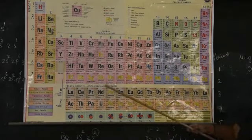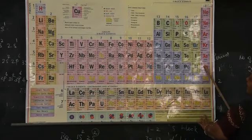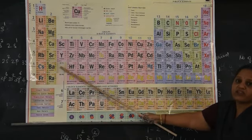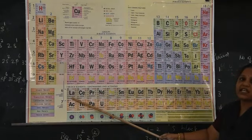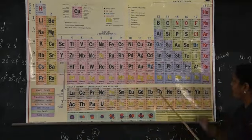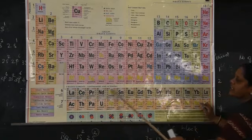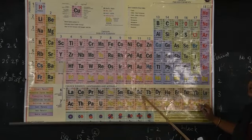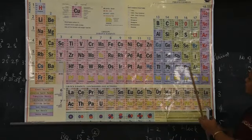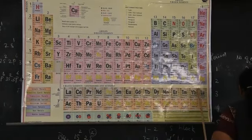In the sixth period, the first two are atomic numbers 55 and 56. After that, atomic number 57 (lanthanum) is actually a D block element, but it is placed along with the 14 lanthanoid elements (atomic numbers 58–71) because their properties are similar. So the sixth period has 18 (regular) + 14 (lanthanoids) = 32 elements.